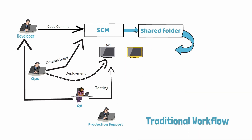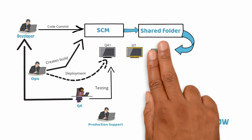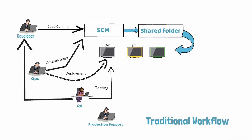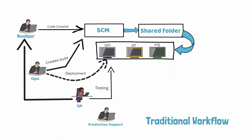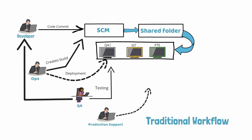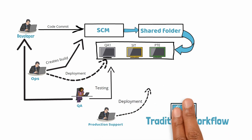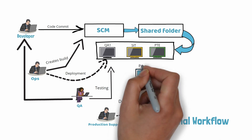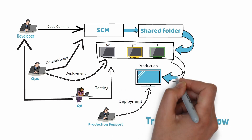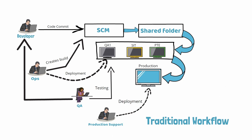Developers would then fix the bugs and defects and commit the code again, and this process will continue for other environments such as SIT, performance test environment — there could be hundreds more environments. Once the change management approved the changes, someone from production support would then deploy the build to the production environment after transferring the build from another environment that was already been tested.